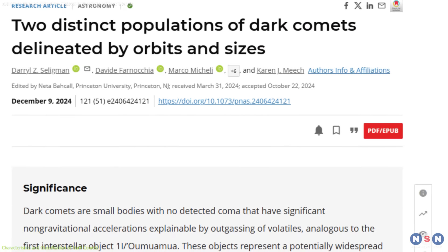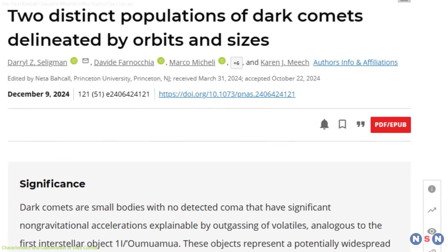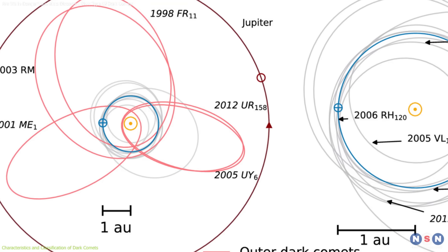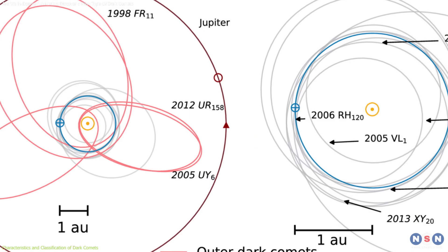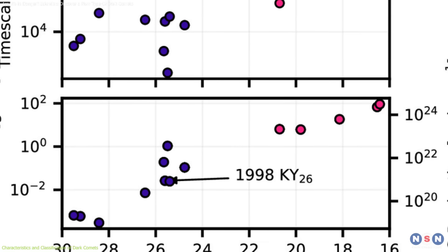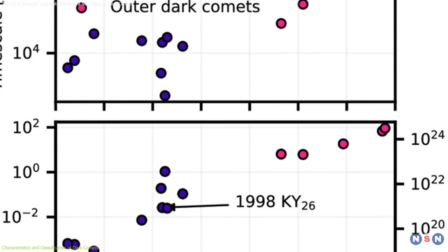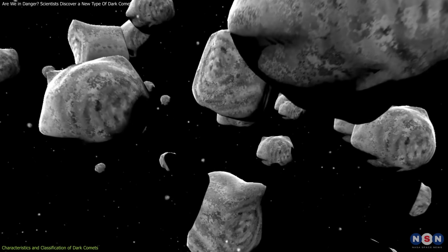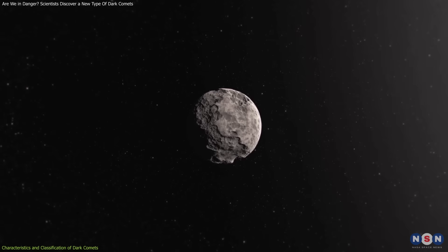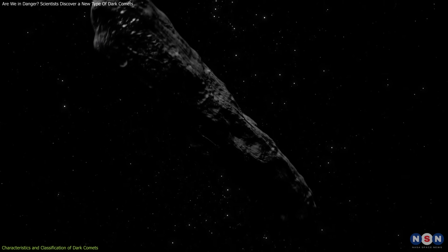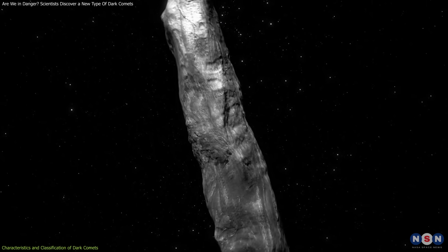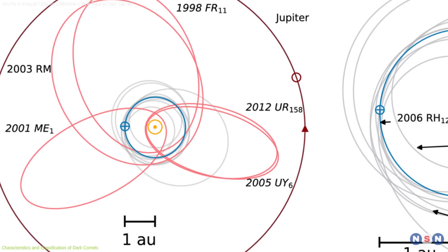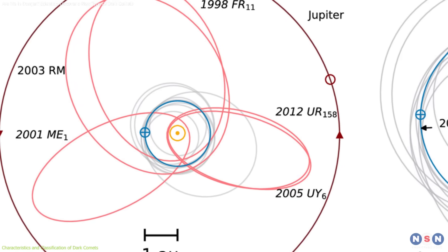Dr. Darrell Seligman and his team at Michigan State University analyzed the reflectivity and orbits of these objects, doubling the number of known dark comets from 7 to 14. They found that dark comets exist in two distinct categories: smaller, inner dark comets with circular orbits, and larger outer dark comets with elongated orbits resembling Jupiter family comets.